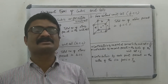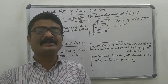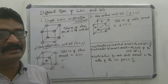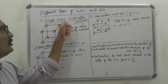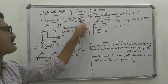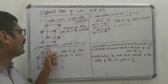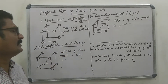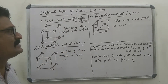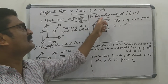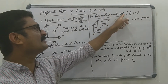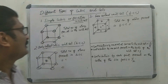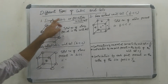Hello students. I am going to discuss different types of cubic unit cells. The first one is simple cubic or primitive unit cell, the second one is body-centered cubic unit cell, short form is BCC, and the third one is face-centered unit cell, short form is FCC.